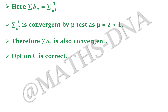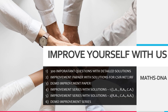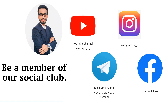Since option (a) was not correct, option (d) is also not correct. So the only correct answers are option (b) and option (c). Thank you — improve yourself with us. We have six different types of series and question papers, and 300 important questions with detailed solutions for competitive exams. The link is in the description box below. Join our social club, check out more than 170 videos on our YouTube channel, and get complete study material on our Telegram channel.